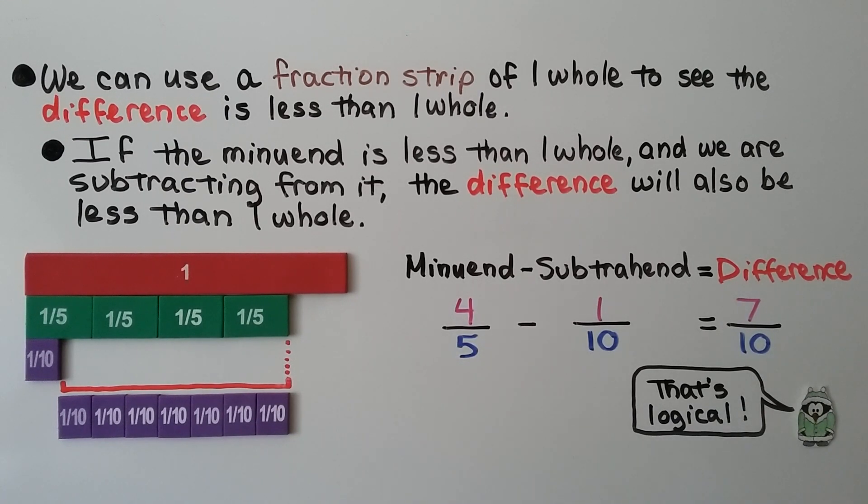We can use a fraction strip of one whole to see the difference is less than one whole. If the minuend is less than one whole, that's the four-fifths, and we're subtracting from it, the difference will also be less than one whole. Four-fifths minus one-tenth equals seven-tenths.